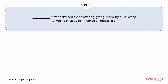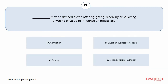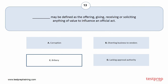Question number 13. [Blank] may be defined as the offering, giving, receiving or soliciting anything of value to influence an official act. Your options are A. Corruption, B. Diverting business to vendors, C. Bribery, D. Lacking approval authority. The correct answer is option C.